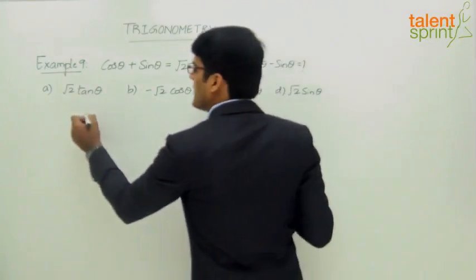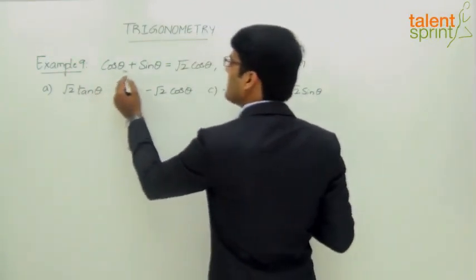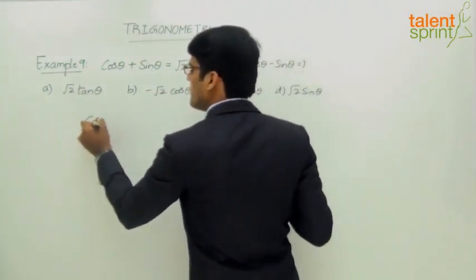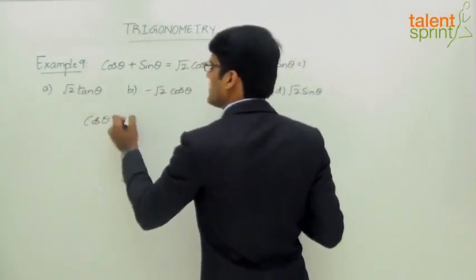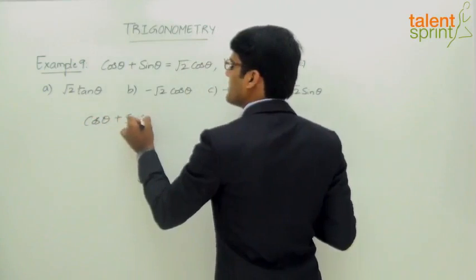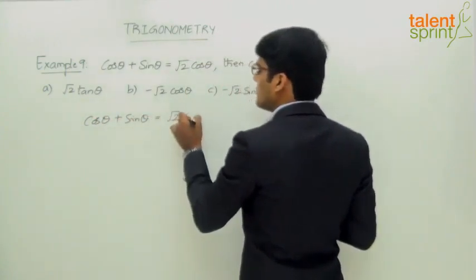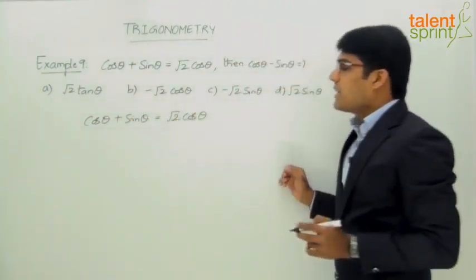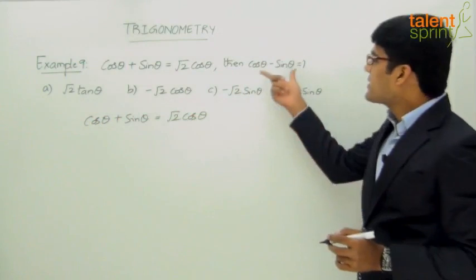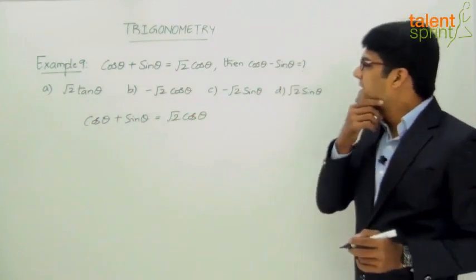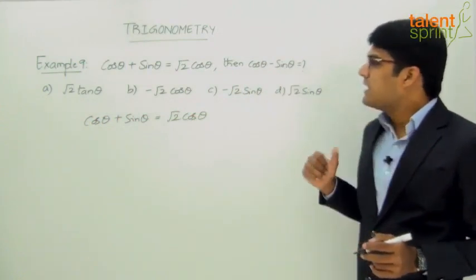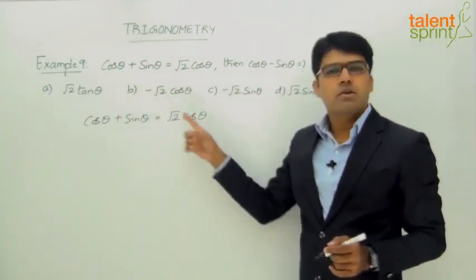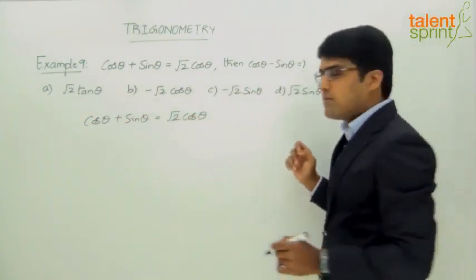We know that cos theta plus sin theta equals root 2 cos theta. What is required here is cos theta minus sin theta. Let us square the given equation on both sides.